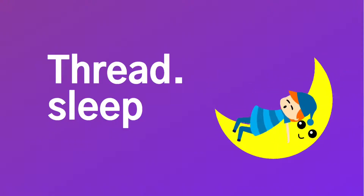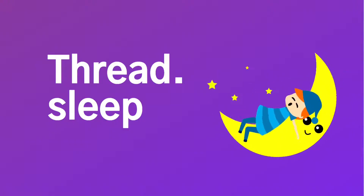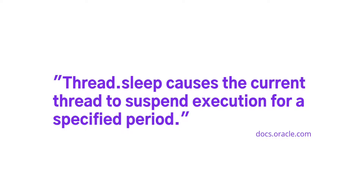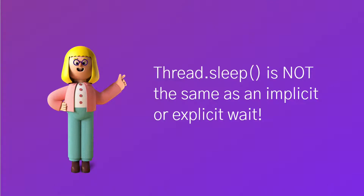This means that we're going to be discussing Thread.Sleep in Java. Here we have the official definition for Thread.Sleep. It says that the current thread is suspended for a specified period. The following point is very important: Thread.Sleep is not the same as using an implicit or explicit wait.